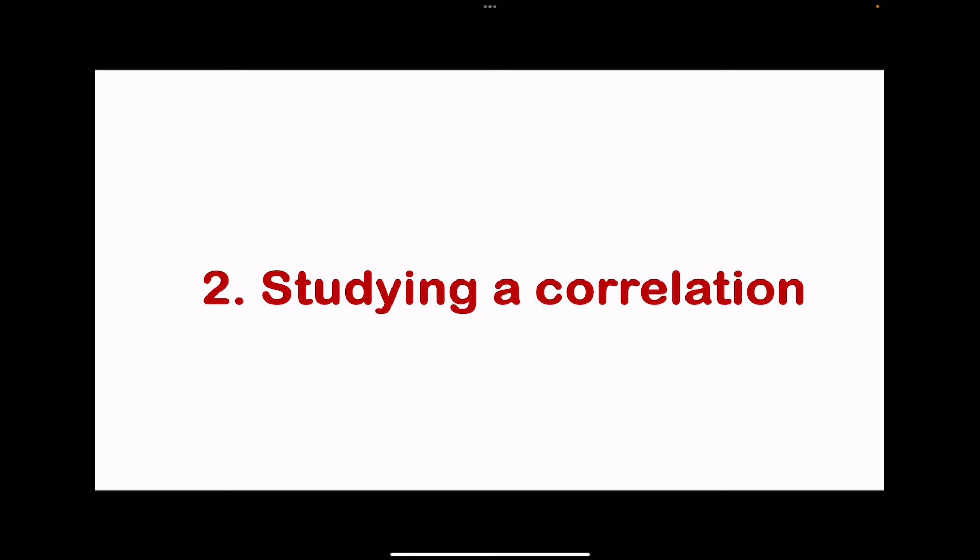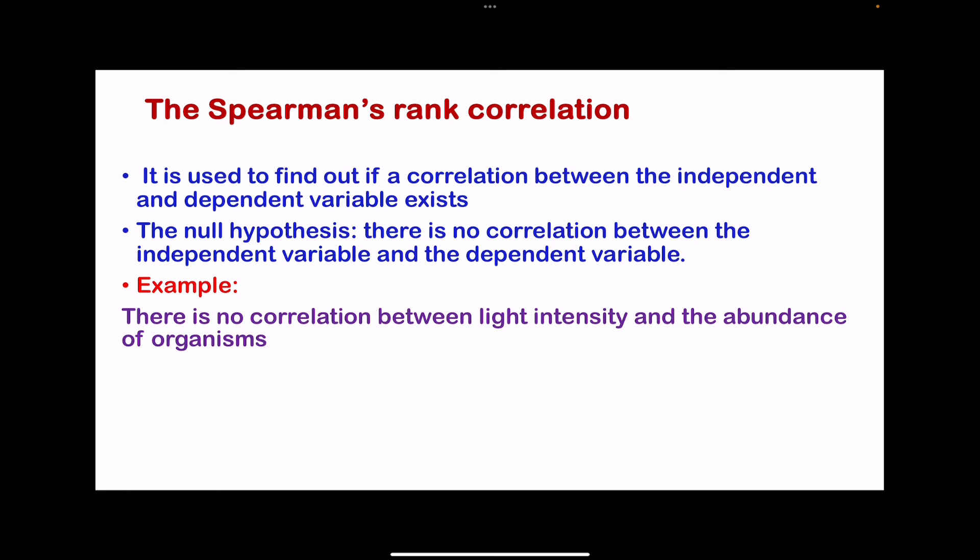The second type of study is studying a correlation. Here I'm just going to use one, which is Spearman's rank correlation. This is used to find out if a correlation exists between the independent variable and the dependent variable. For this one, we state a null hypothesis, which is: there is no correlation between the independent variable and the dependent variable.